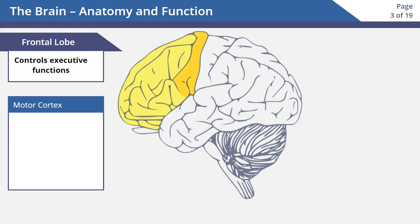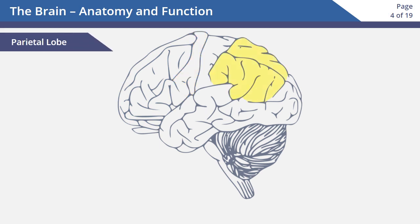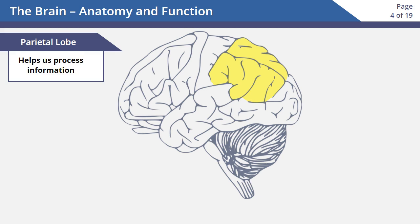The motor cortex is in the frontal lobe. It helps us move our arms, legs, and other body parts. The parietal lobe is found in the middle of the brain. It helps us process the information we get from the outside world.